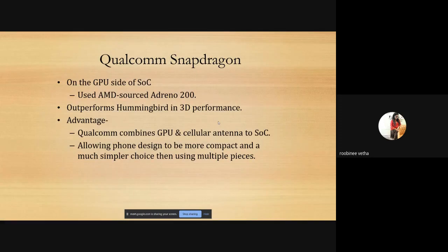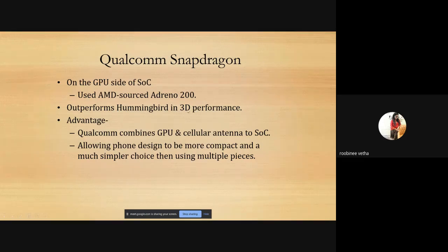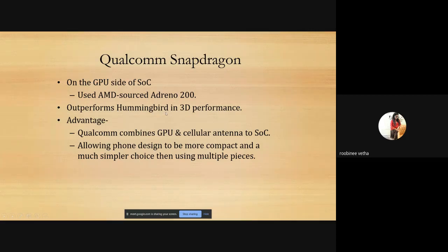The GPU, or Graphics Processing Unit — previously mobile phones didn't have a GPU, just a single processor for every operation. Now with GPU performance, we can do anything on our mobile phones. That GPU in Snapdragon is called Adreno. The first version of the GPU is Adreno 200, the first invented GPU, and it outperforms the Hummingbird in 3D performance. Qualcomm combined with the GPU gives efficient processor function.